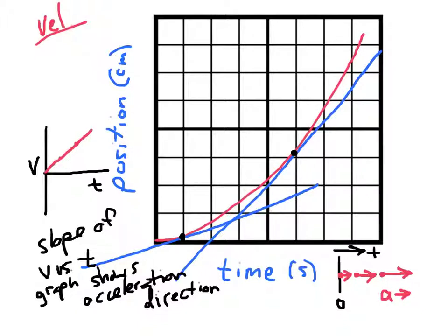That's how we can make connections between the position-time graph, the velocity-time graph, and a motion map, and indicate the acceleration direction.